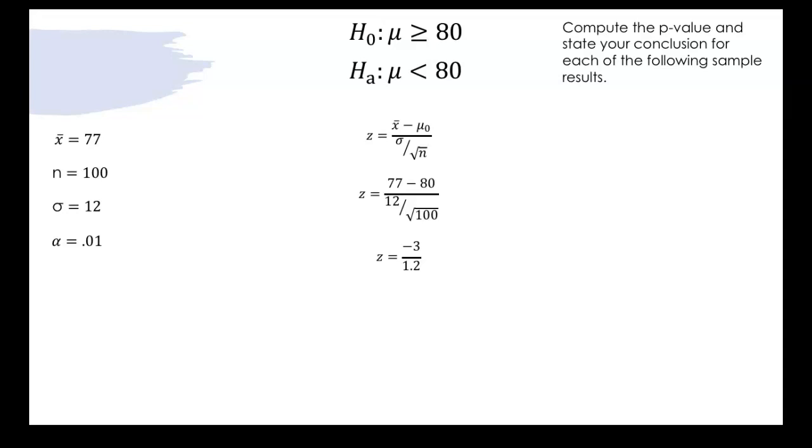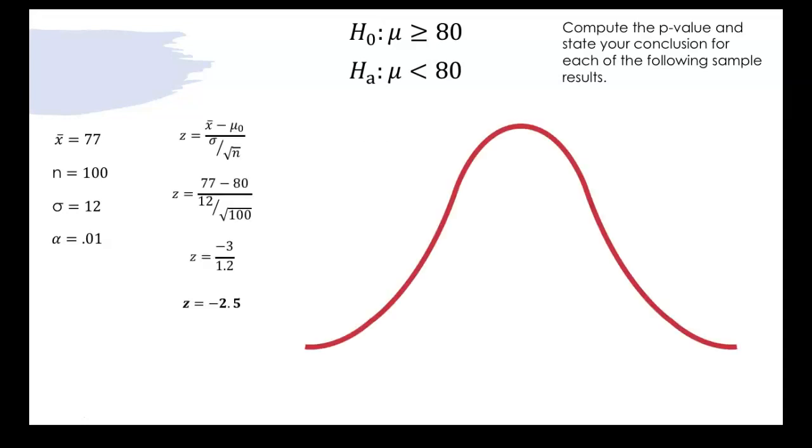So we have our bell curve once again we put our z-score of negative 2.5 on there and we need to figure out which tail we're working with so we go up to the alternative hypothesis and see that the sign is pointed to the left.